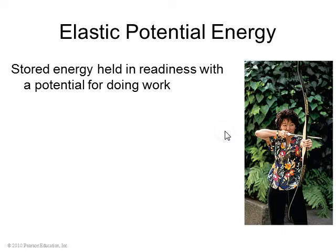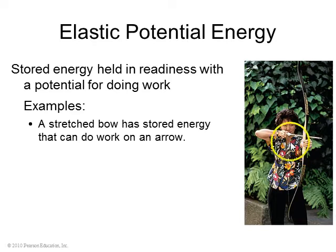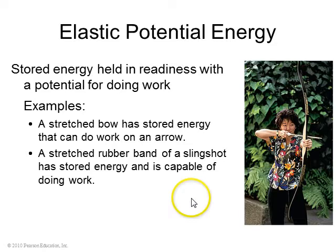Back to energy. Another form of energy is potential energy. Potential energy is stored energy that could do some work. So there's elastic potential energy, like a stretched bow has some stored energy in it, and it can do work on the arrow, causing it to speed up. A stretched rubber band and a slingshot also has elastic potential energy.